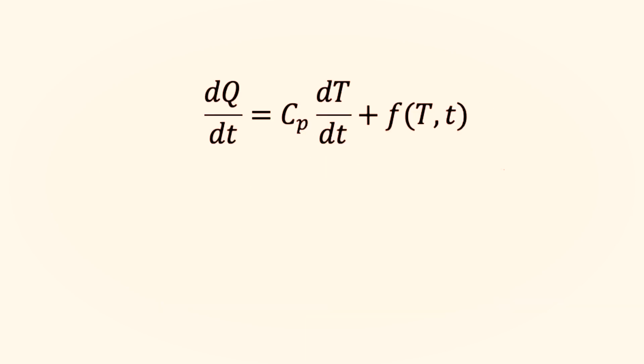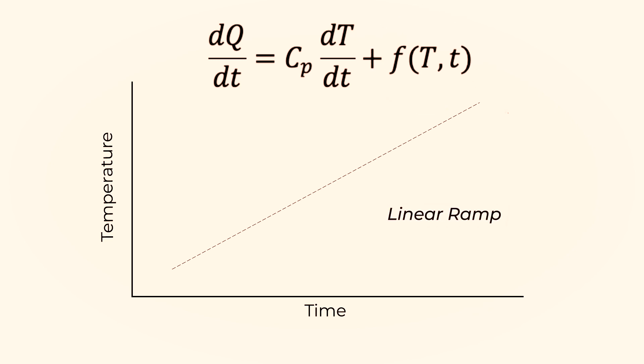The MDSC works on the governing equation as shown here. The heat flow can be divided into two components. One component that depends on the heat capacity and the rate of temperature change, and the second component is directly proportional to the temperature itself. This contains all the kinetic transitions. Thus, when we introduce the linear ramp, we get information on the temperature changes, whereas the sinusoidal temperature profile gives information about the specific heat that is more to do with the rate of temperature changes.